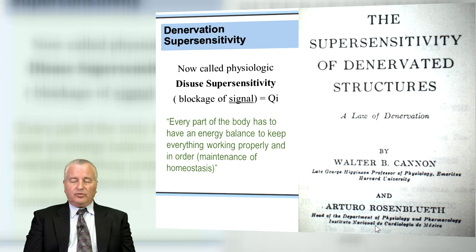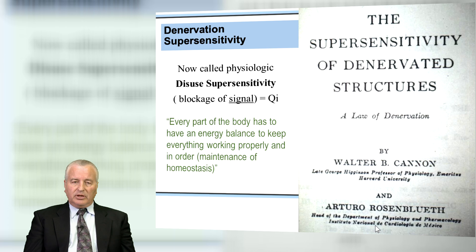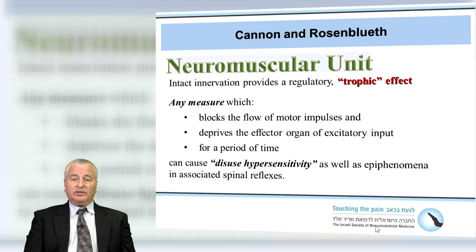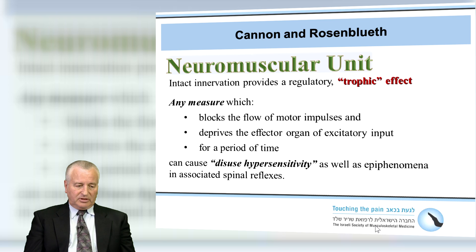Walter Cannon, in the 1940s, developed an idea of disuse sensitivity. He was the first to recognize the fight or flight syndrome — autonomic symptoms. In his studies about denervation supersensitivity, he realized that in a neuromuscular unit, a motor unit, we must have a healthy nerve influencing a muscle to keep it healthy. The idea of that neuromuscular unit is that the nerve supplies a trophic effect — a healthy growth effect. And when we interrupt or block motor impulses on that nerve at any point and deprive the effector organ, the muscle, of its input, the muscle is going to develop a disuse hypersensitivity, and we'll see epiphenomena from a segmental viewpoint.